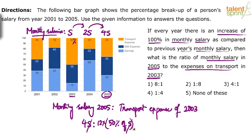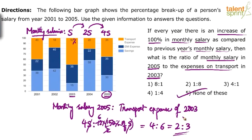S and S cancel out. 50% is 1/2, and 12 × (1/2) = 6. So the ratio is 4S to 6S, which simplifies to 4:6 = 2:3. Monthly salary in 2005 versus transport expense of 2003 is 2:3. Those who got 8:1 considered the yearly salary of 2005 instead of monthly. The correct answer is option 5 — none of these — with the ratio being 2:3.